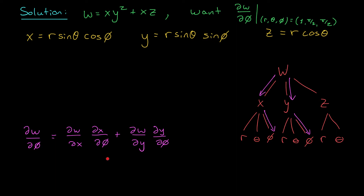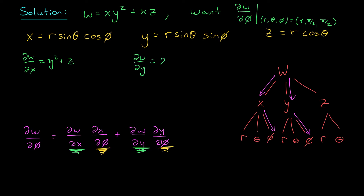That's going to give us: partial w by partial phi equals partial w by partial x times partial x by partial phi, plus partial w by partial y times partial y by partial phi. This is the expression for partial w by partial phi. We can actually calculate some of these derivatives. We have a formula that relates w to x, y, and z, and that allows us to calculate partial w by partial x, which is y squared plus z, and partial w by partial y, which is simply 2xy.